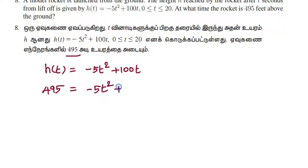So 495 = -5t² + 100t. Let's take all terms to one side: 5t² - 100t + 495 = 0.